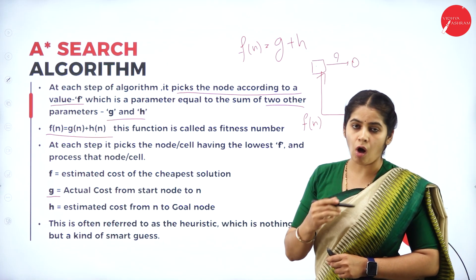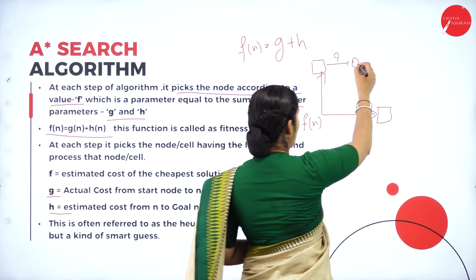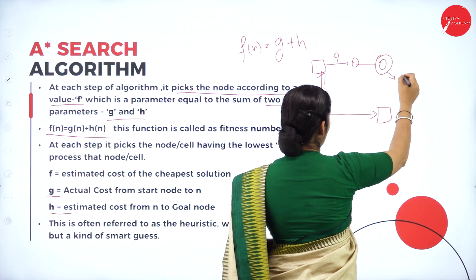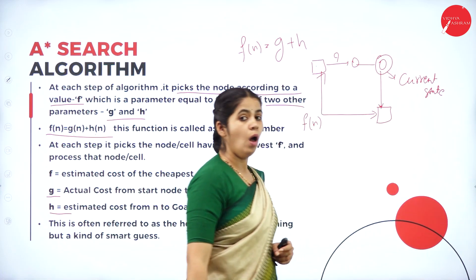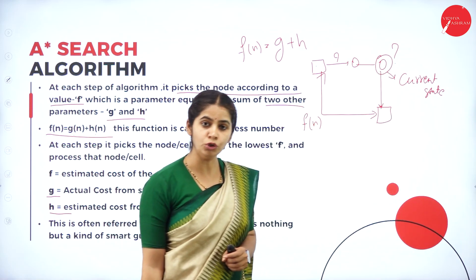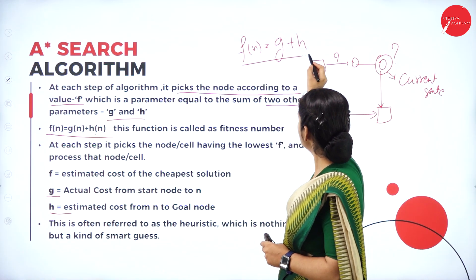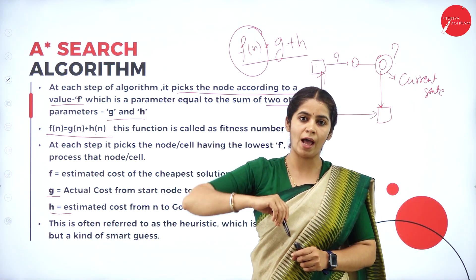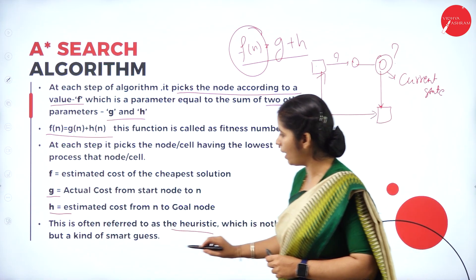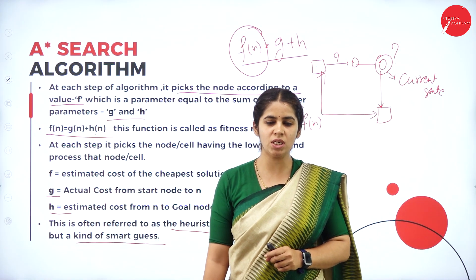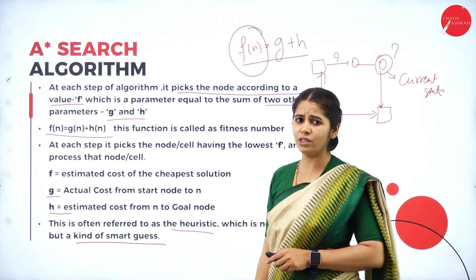What is h(n)? h(n) is the estimated cost from node n to the goal node. Consider you are somewhere in the middle — from that current state, to reach the goal, what is the cost required? That is given by the function h(n). So at each step it picks the node cell having the lowest f. After computing f(n) for each cell, we pick the node with the smallest f(n) value. This is often referred to as a heuristic search, which is a kind of smart guess — guessing how much cost is needed to reach the target.